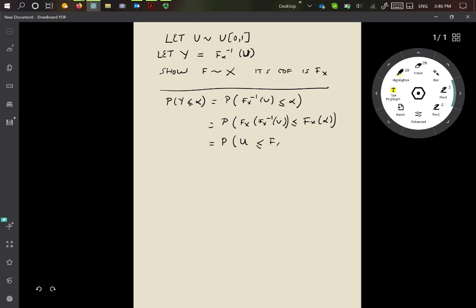We've already seen that this is nothing more than F_X of alpha. So probability that Y is less than or equal to alpha is F_X of alpha. This means that Y has the CDF F_X, which means that Y is distributed the same way as X. So that is the proof that we want.